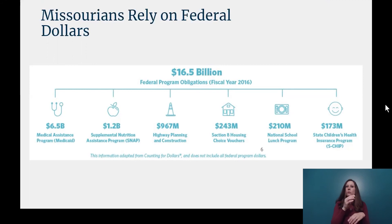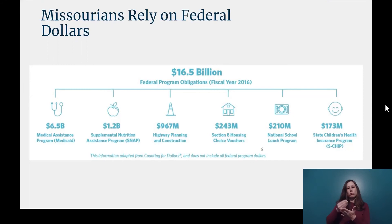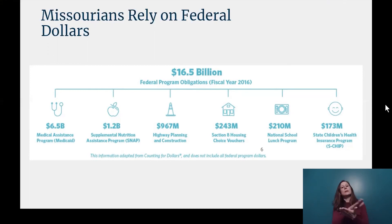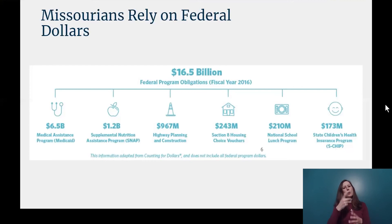Here's the breakdown of the federal programs that receive funding: $6.5 billion in Medicaid, $1.2 billion in SNAP, $967 million for highway planning and construction, Section 8 Housing — a voucher program to assist low-income families, the elderly, and individuals who are disabled to afford decent, safe, and sanitary housing in the private market — that's $240 million. $210 million for national school lunch programs, $173 million for CHIP. There are also programs like Head Start, health centers funding, special education grants, WIC, and much more.